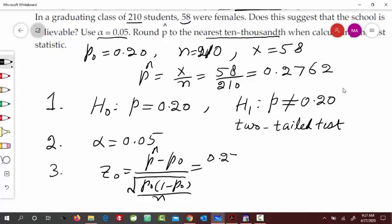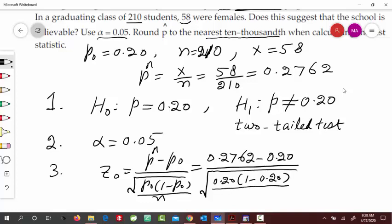So 0.2762 minus 0.20 divided by inside the square root, p0 times 1 minus p0 divided by n, n is 210. And this is approximately equal to 2.76.